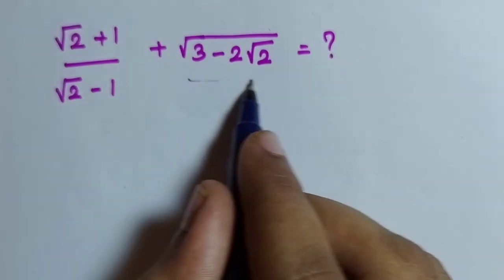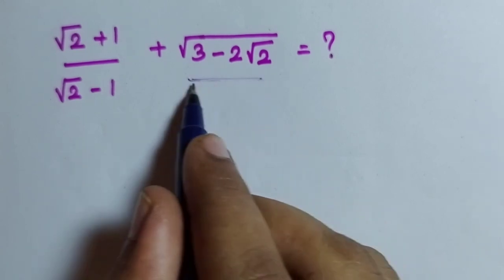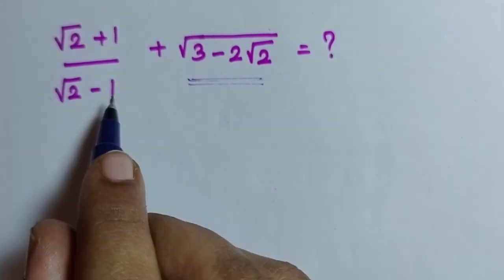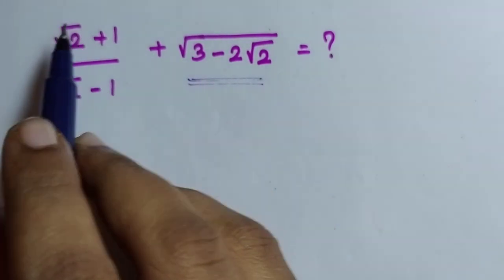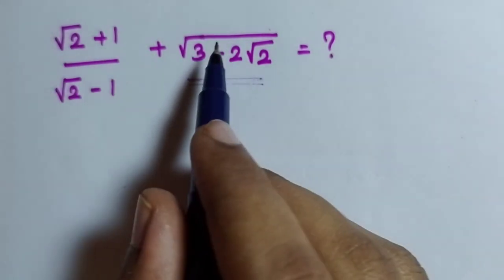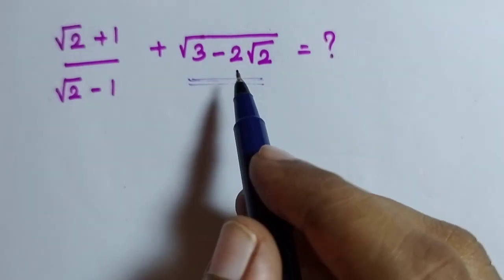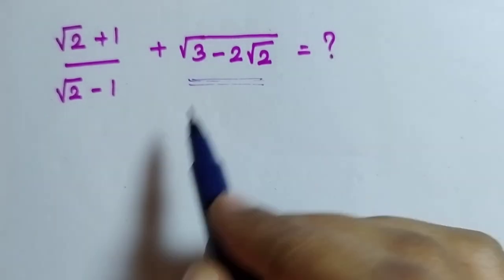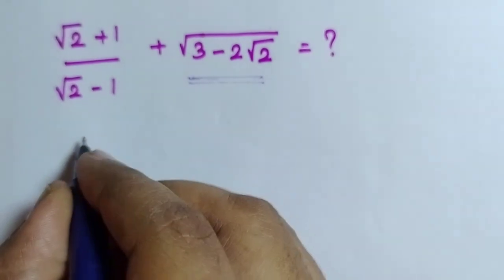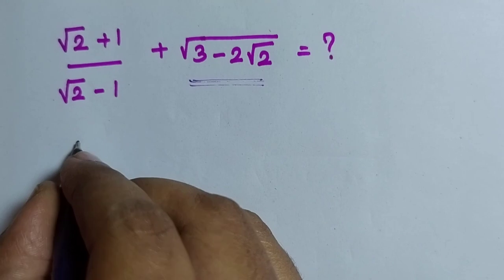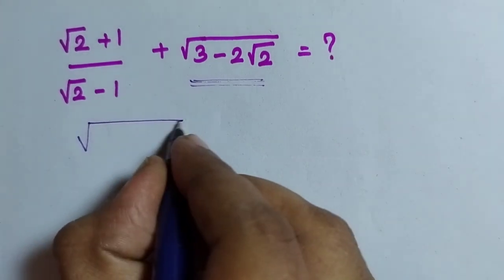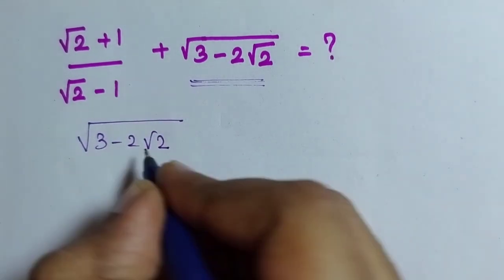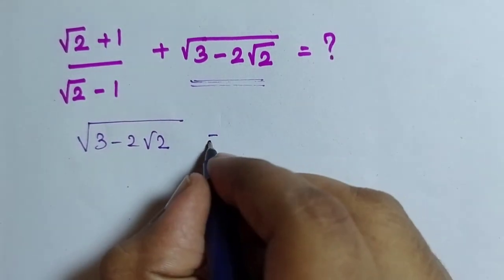First I am going to simplify this because I need to know what's the relation between this term and this term. In order to know this, I am going to take this term — 3 minus 2 root 2 — and I am going to simplify that.